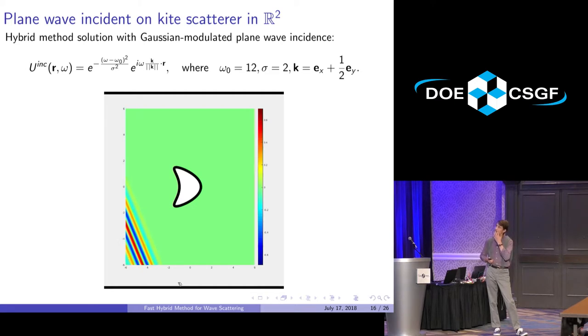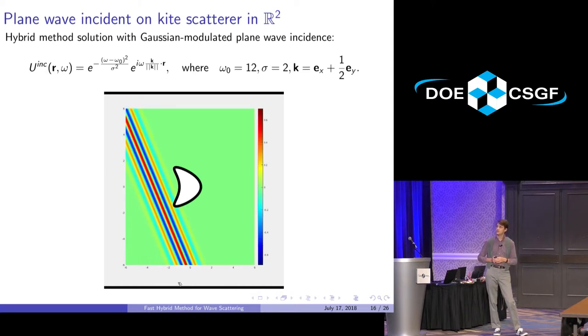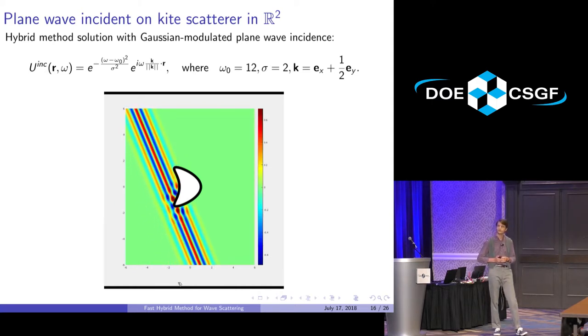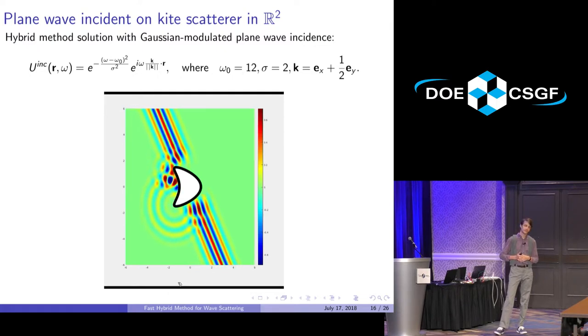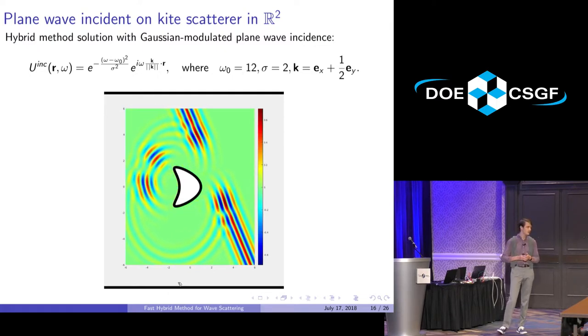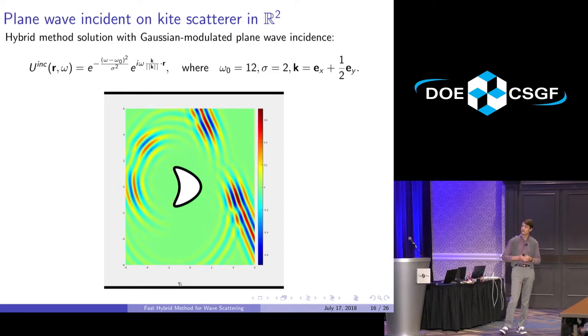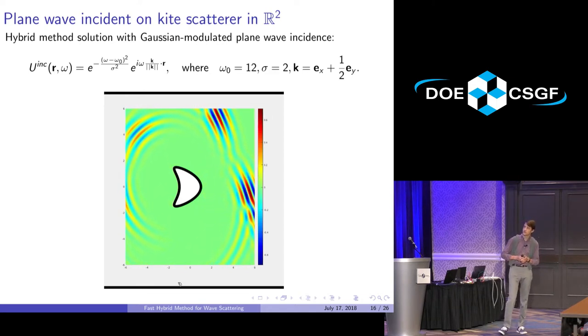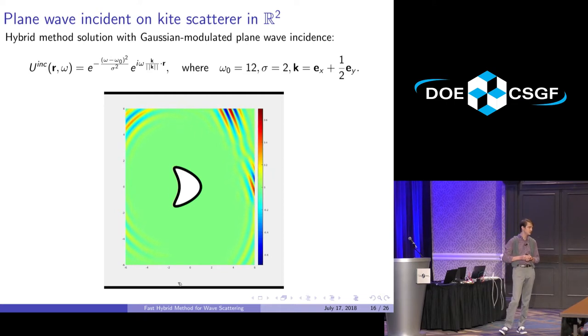Here's an example solution. You have a plane wave of many frequencies impinging on a kite-shaped scatterer. This is a fully time-domain solution, and it's really just sampling—not progressing iteratively through time. You're sampling a bunch of time-domain solutions and stitching together in a video. In particular, I could compute the solution right here at order one cost, and it wouldn't cost me anything extra. I wouldn't have to compute the entire time history.